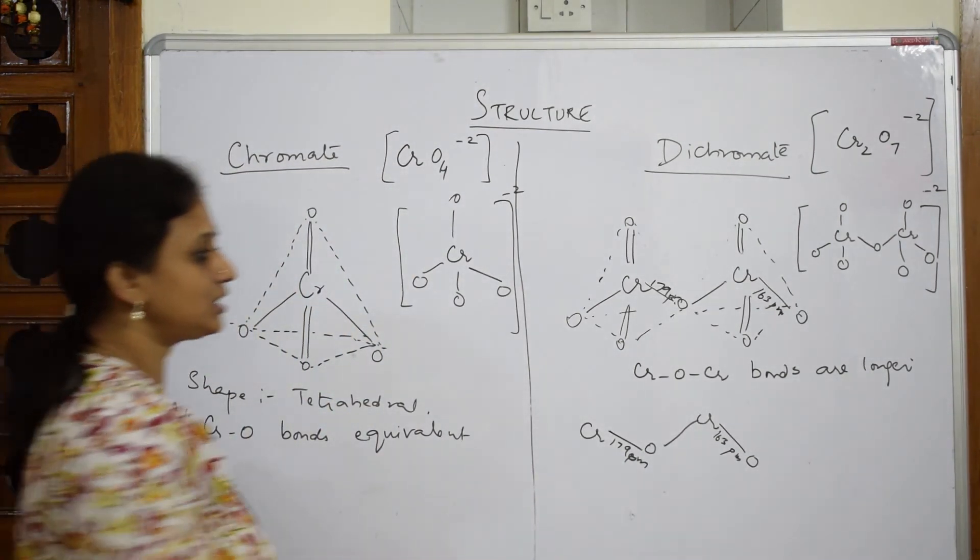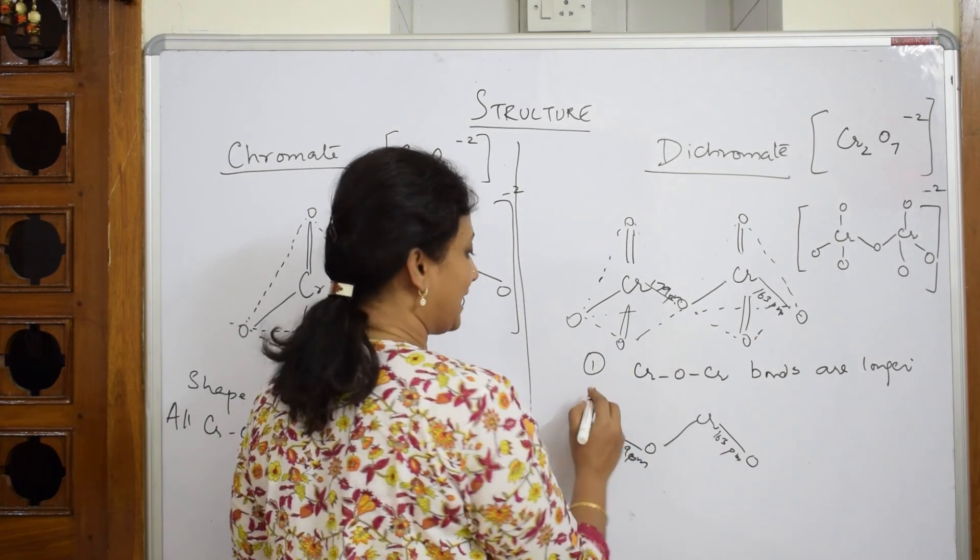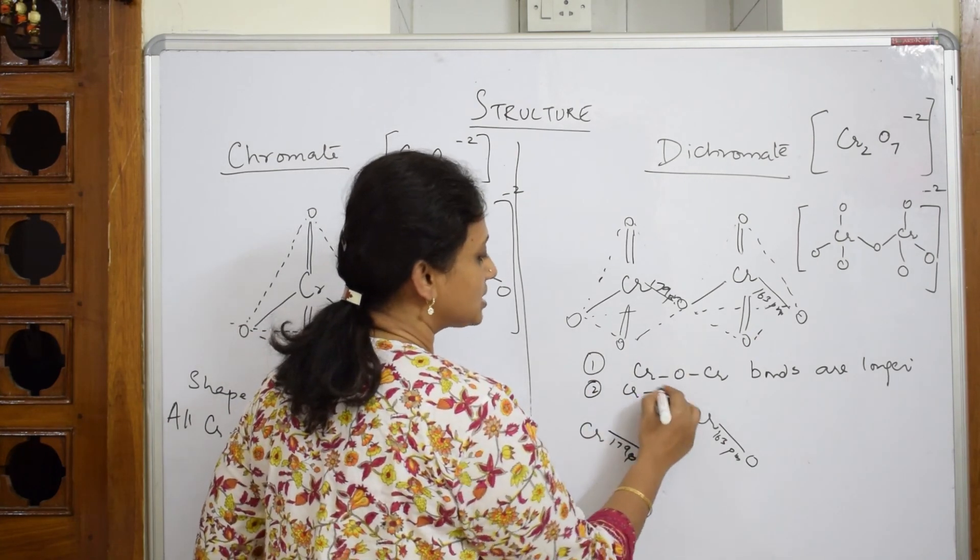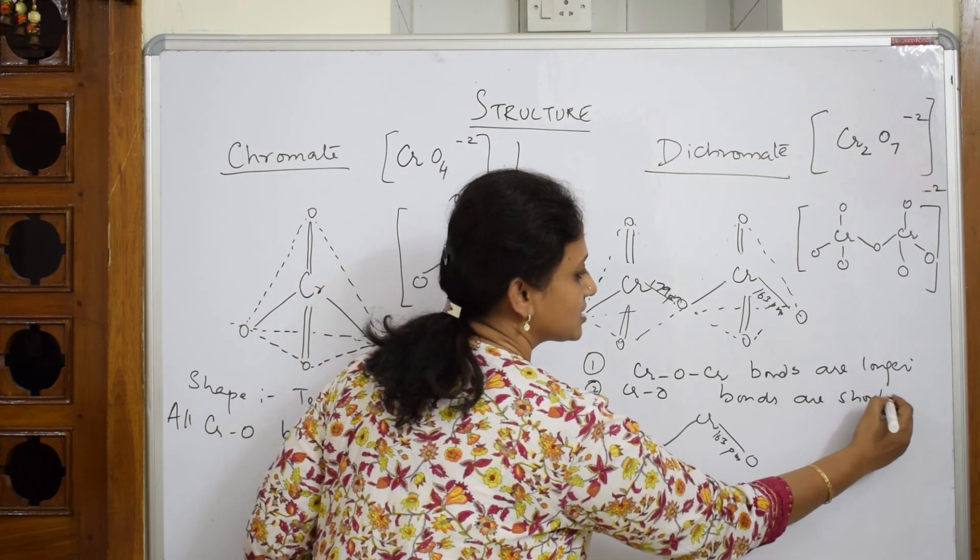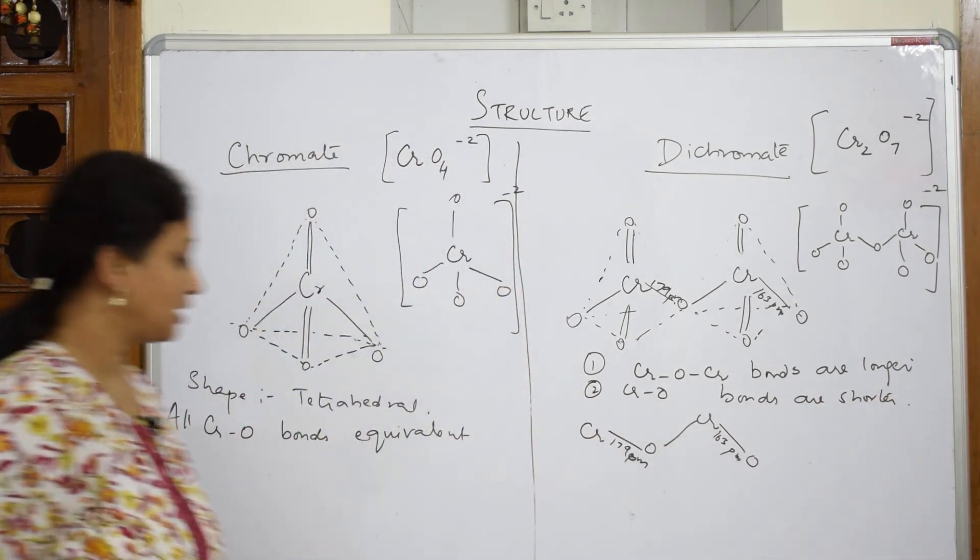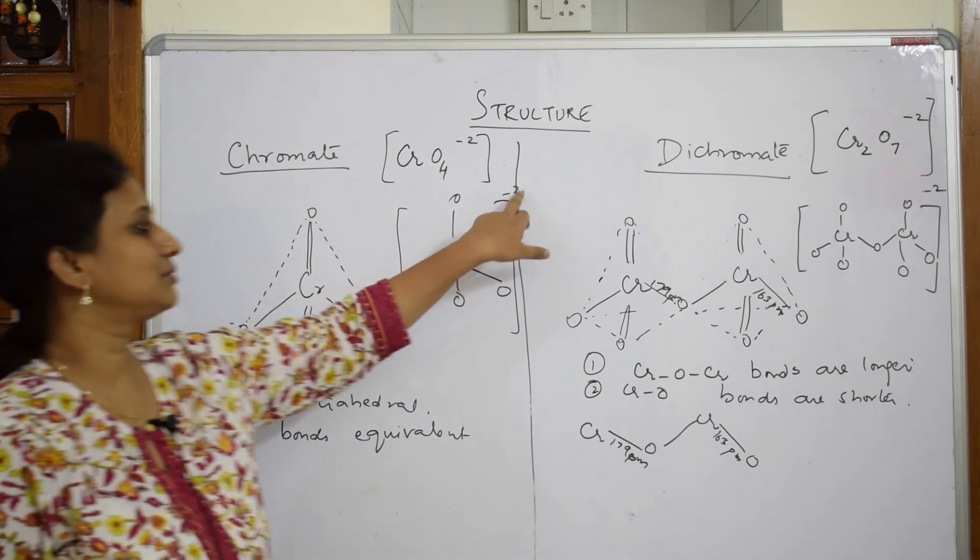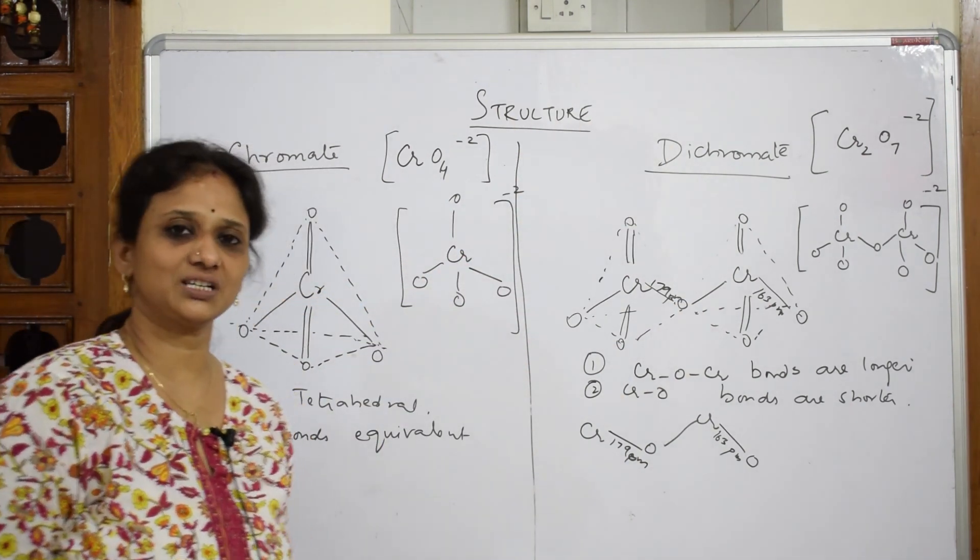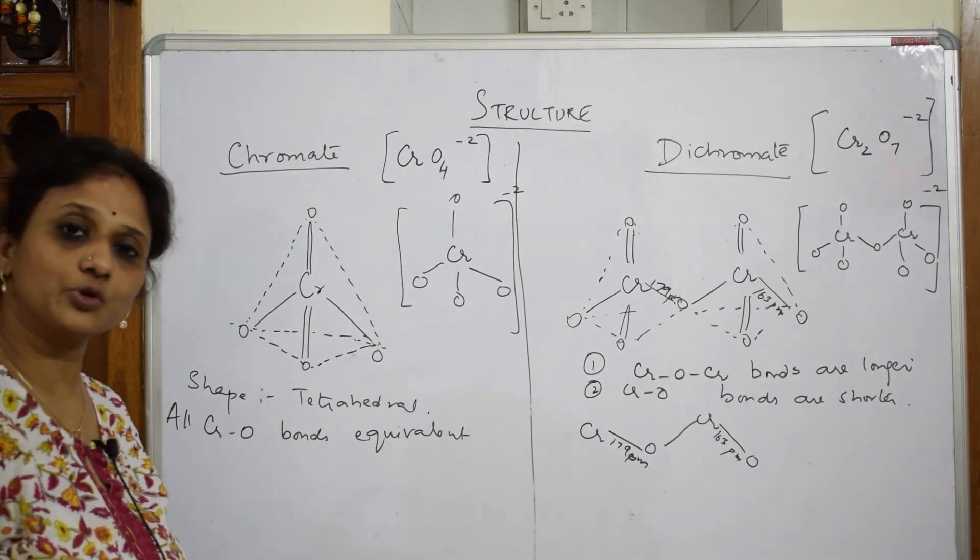So here all are equivalent, but Cr-O-Cr bonds are longer and Cr-O bonds are shorter. That's it. Important thing to remember. Now when I have to come back to the structure, as I have said, minus 2 charge, there are also minus 2 charge. That's more than enough for you to explain the whole structure of chromate and dichromate.